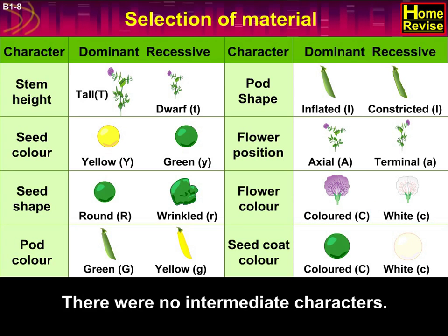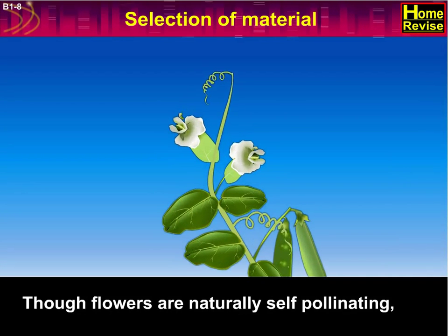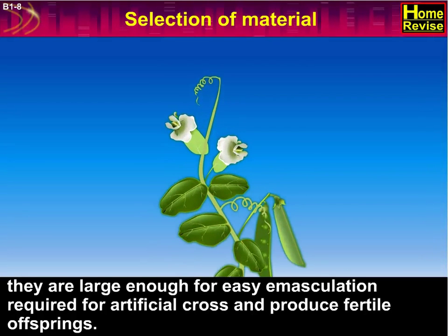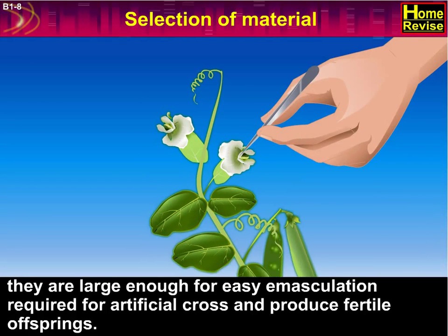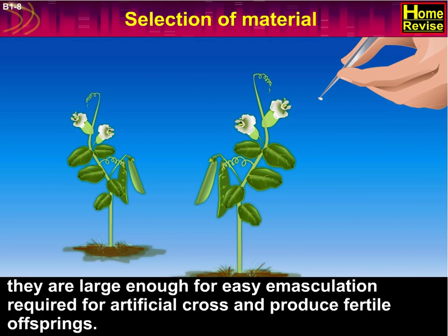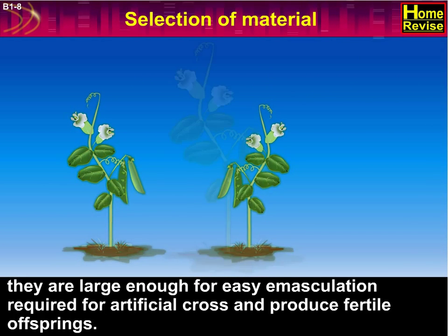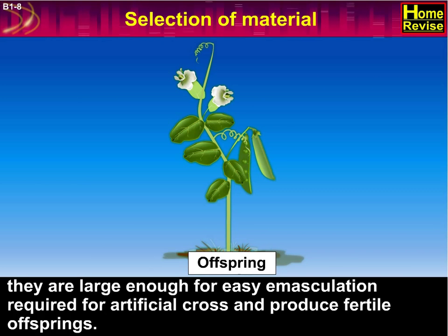There were no intermediate characters. Though flowers are naturally self-pollinating, they are large enough for easy emasculation required for artificial crosses, and they produce fertile offspring.